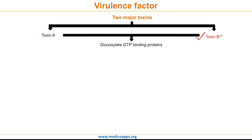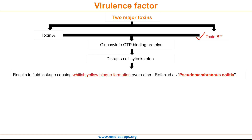Both these toxins glucosylate GTP-binding proteins, which finally leads to the disruption of the cell cytoskeleton. This ultimately leads to fluid leakage in the colon, causing whitish-yellow plaque formation.